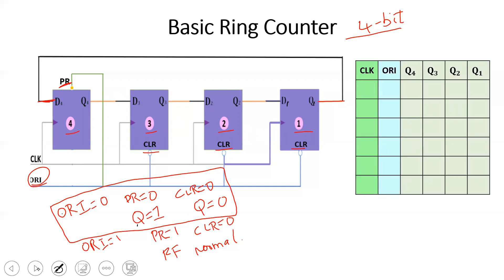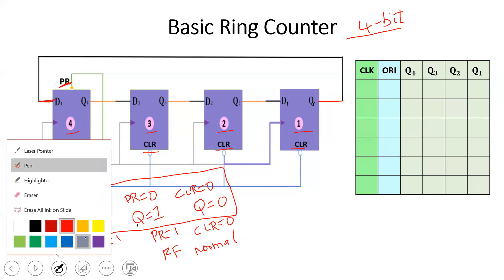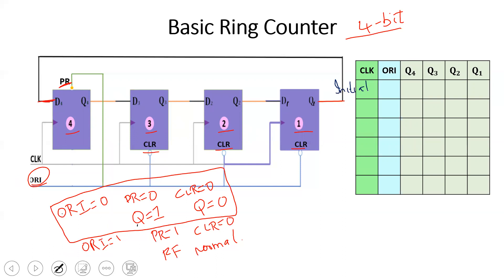Before the initial clock pulse, the overriding input is active. Preset 0 and clear signal is 0, so the flip-flop output is 0. Before giving the clock pulse, I will set the flip-flop output: set Q1 to 1 and the rest to 0. Then preset and clear signal returns to 1, and the flip-flop operates normally. The first clock pulse is then applied.